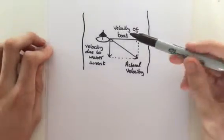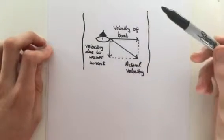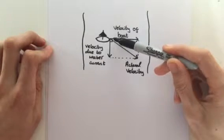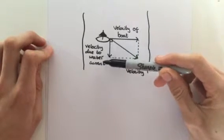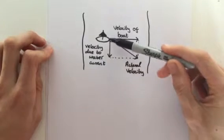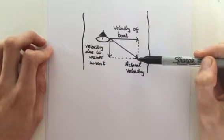Here you have a boat and you have the velocity of the boat acting in that direction and you have the velocity due to the water current. But the actual velocity is in that direction.